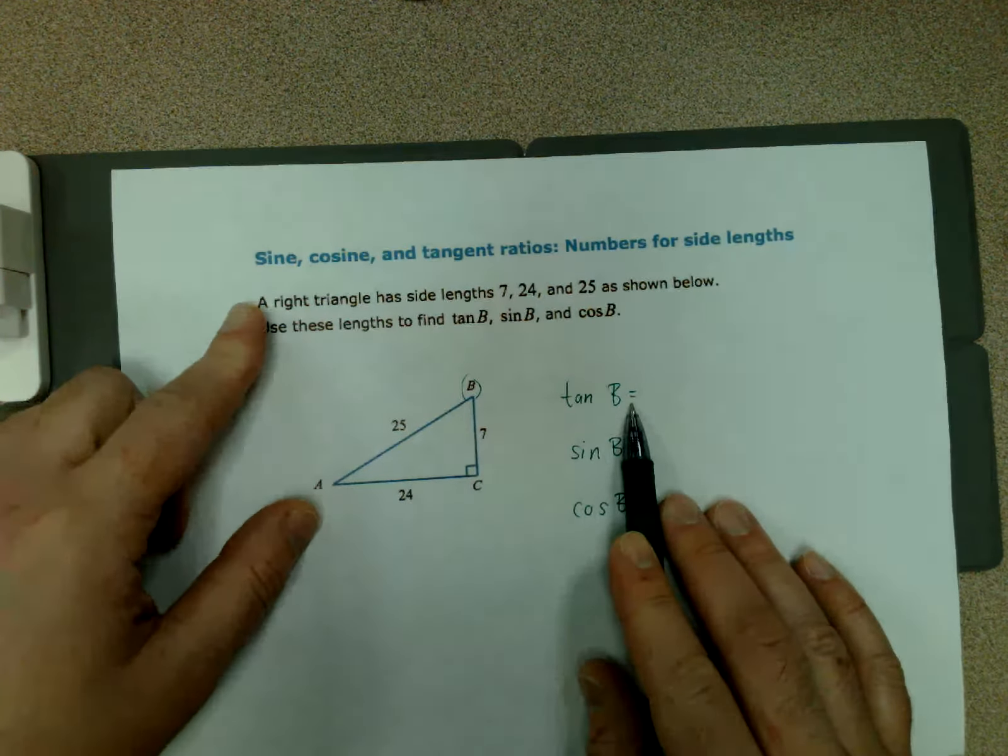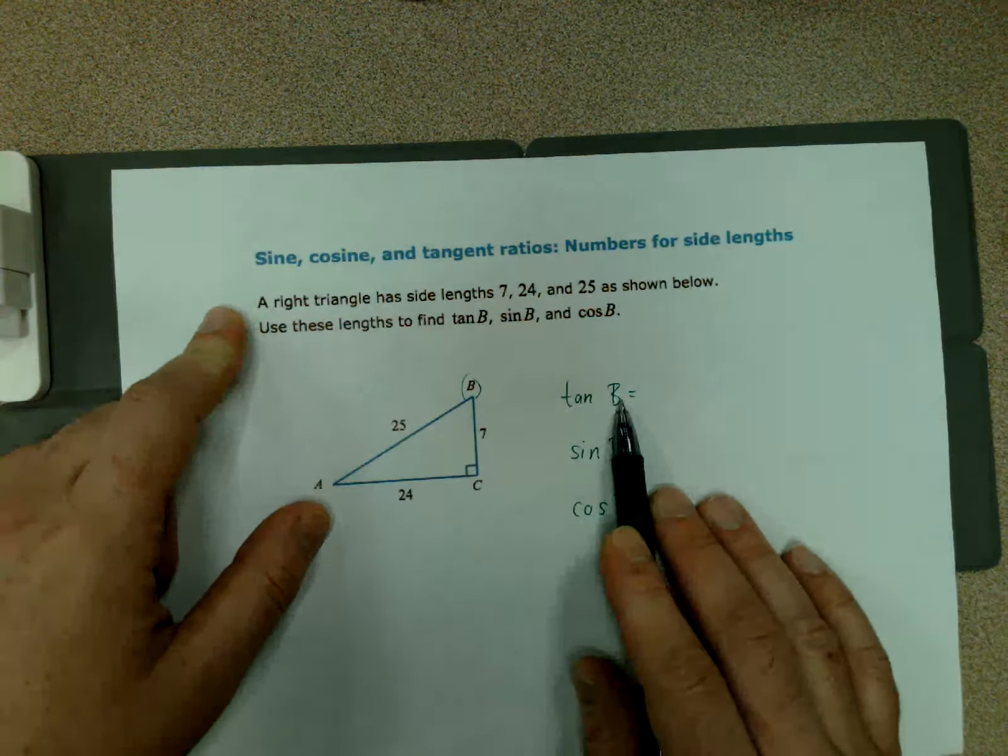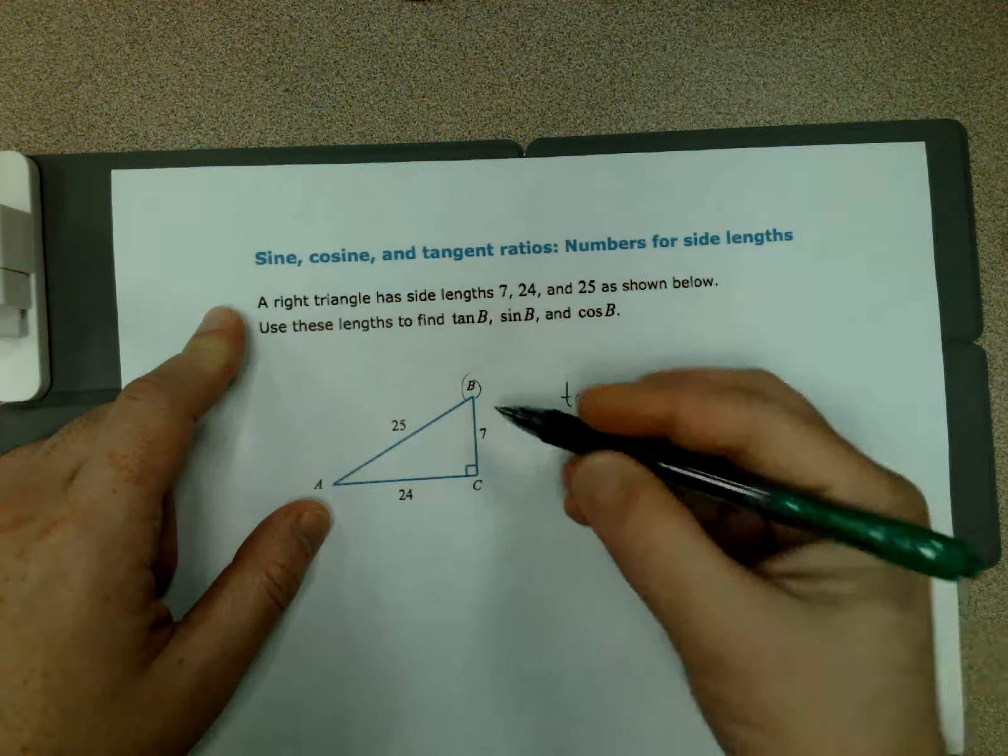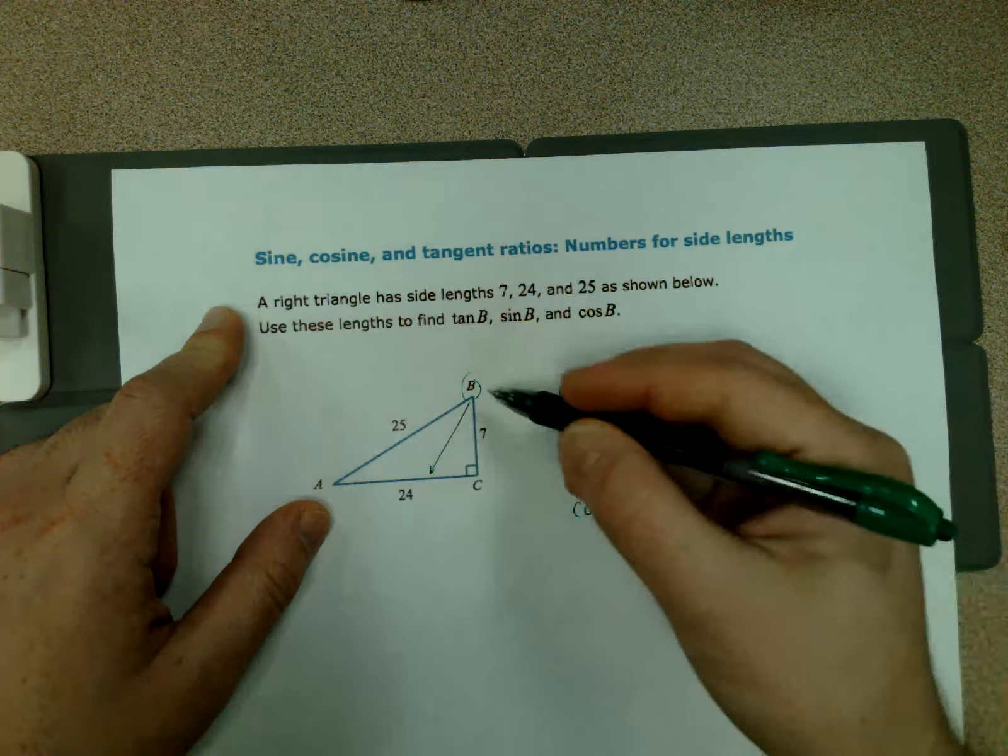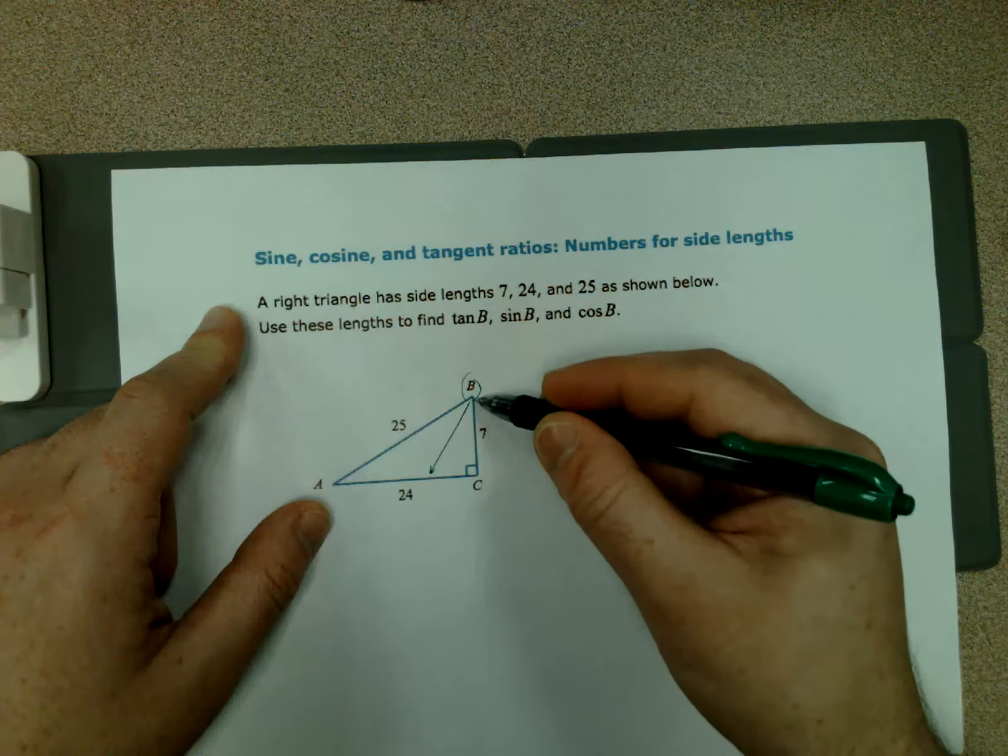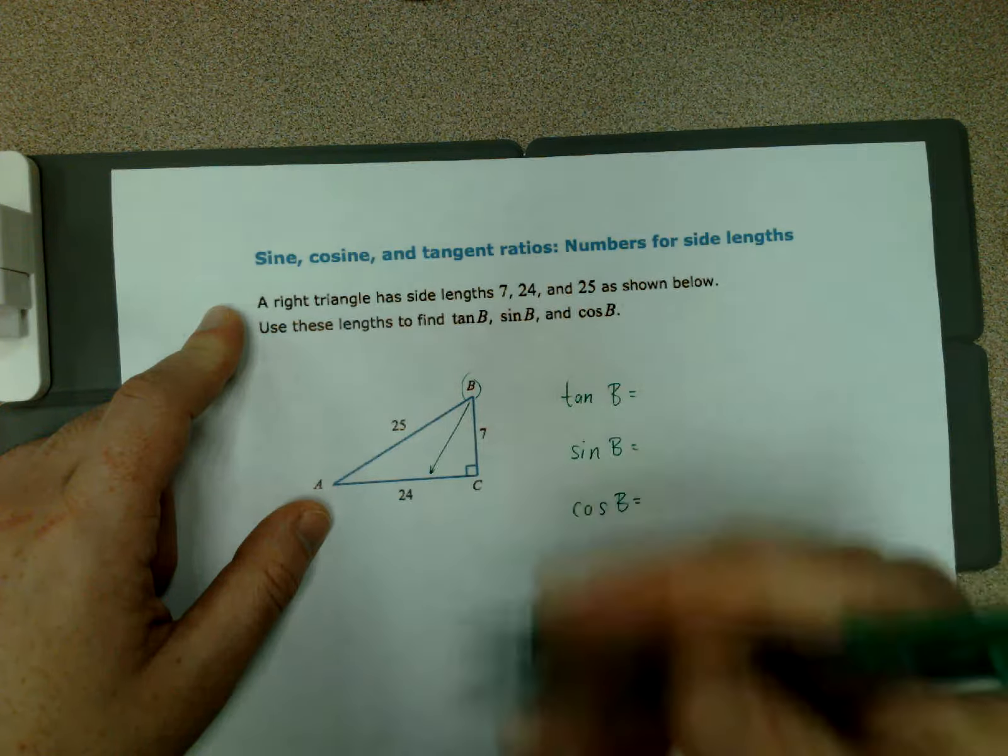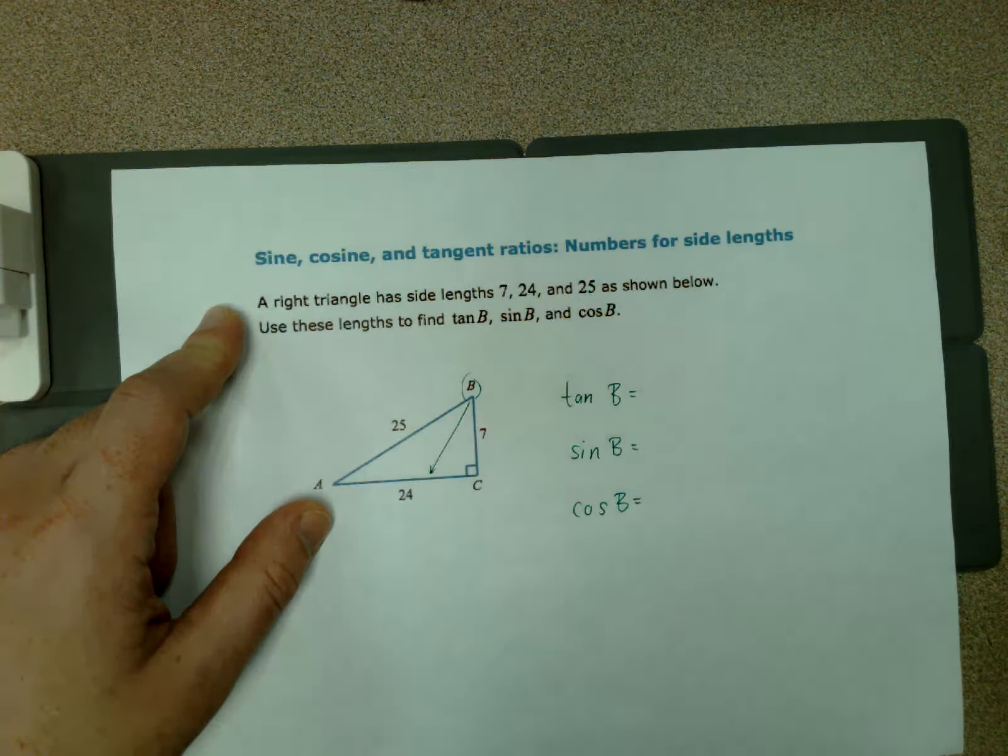Tangent uses both of those—it's opposite over adjacent. The opposite is the one I need to cut across the triangle to get to, as opposed to the leg which is directly next to angle B. It actually makes up one side of angle B, so that would be the adjacent side.